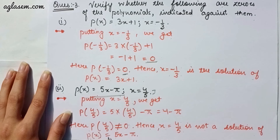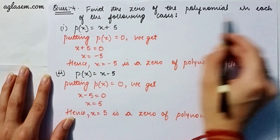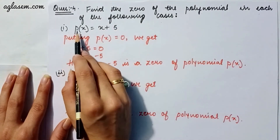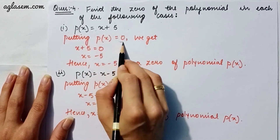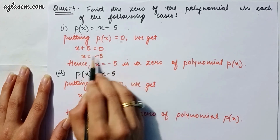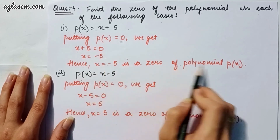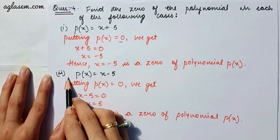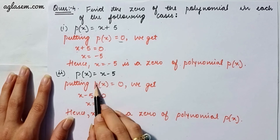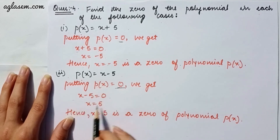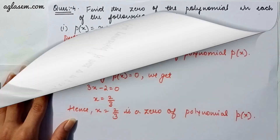Moving to our fourth question: find the zeros of the polynomial in each of the following cases. Part 1: p(x) = x + 5. Setting p(x) = 0, we get x + 5 = 0, so x = -5 is the zero. Part 2: p(x) = x - 5. Setting p(x) = 0, we get x = 5, so x = 5 is the zero.